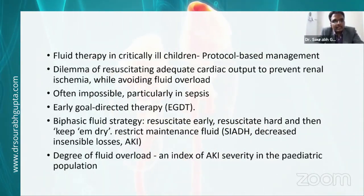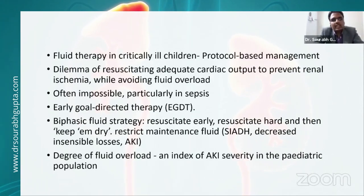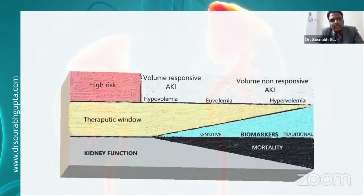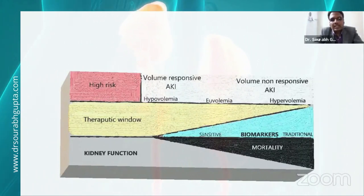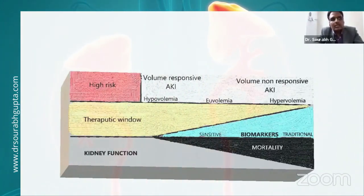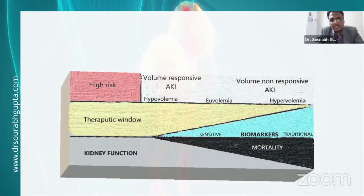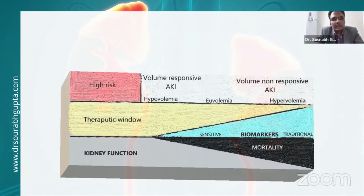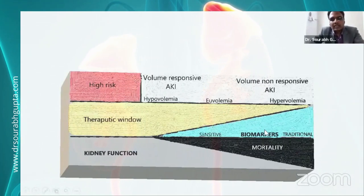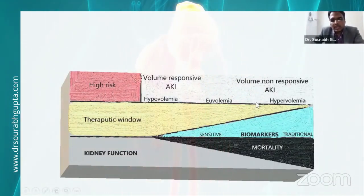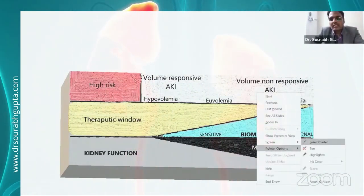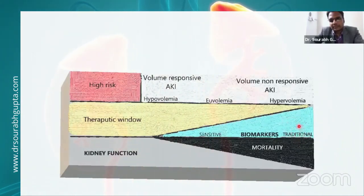In pediatrics specifically, there is evidence in the form of percentage volume overload as an index of severity, associated with increased morbidity, mortality, and length of stay. The therapeutic window narrows as the severity of AKI worsens. It is very wide when the patient has normal-appearing renal function at high risk, and still wide with volume-responsive AKI. At that point traditional biomarkers are normal, and new biomarkers also normal but not in routine use. By the time traditional biomarkers are elevated, it is already too late — we need better biomarkers.